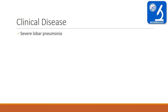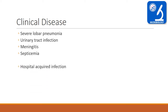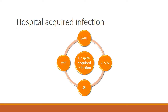The clinical manifestations of Klebsiella include severe lobar pneumonia, urinary tract infection, meningitis, septicemia, and hospital-acquired infection. Hospital-acquired infection, also called nosocomial or healthcare-associated infection, is an infection acquired in the hospital by a patient admitted for a reason other than that infection, and which was not present or in an incubating state at the time of admission. For example, a patient admitted with stroke in ICU who develops a catheter-associated urinary tract infection.